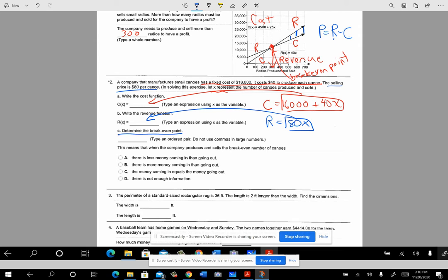It says determine the break-even point, so you're looking where those two things wind up being equal, where the cost equals revenue. Where does 80X equal the cost, which was $16,000 plus $40X? So this is now an equation with a single variable. I'm going to subtract 40X from both sides to get the X's together. That's going to be 40X equals $16,000, and then to get the X by itself you divide by 40.